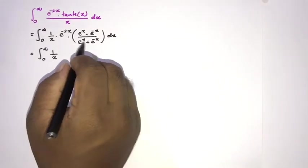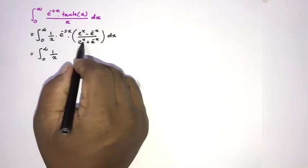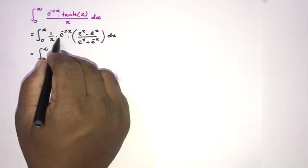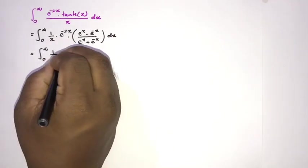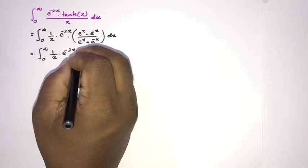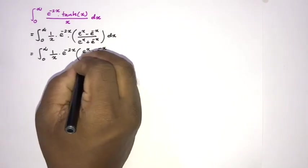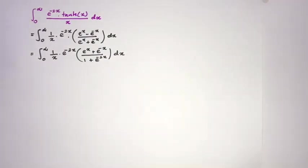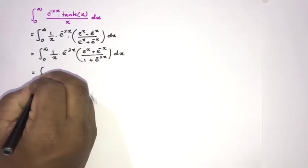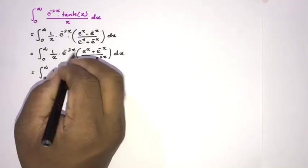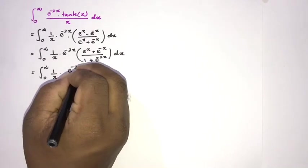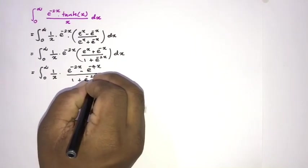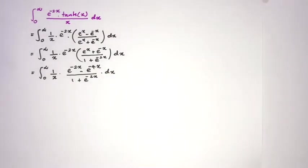Now I am going to take e to the x as a common factor from the denominator. If we do that, we get e to the minus 2x over e to the x, which gives e to the minus 3x, times the numerator. After multiplying through, we obtain the integral from 0 to infinity of 1 over x times (e to the minus 2x minus e to the minus 4x) over (1 plus e to the minus 2x), dx.